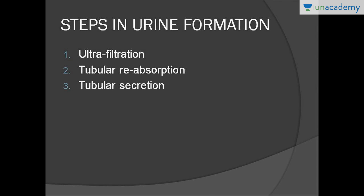Let's start with the three main steps in urine formation. These are: ultra-filtration, tubular reabsorption, and tubular secretion. These are the three main steps in urine formation.